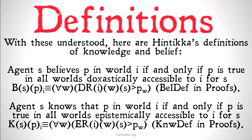With these understood, here are Hintikka's definitions of knowledge and belief. Agent S believes P in world I, if and only if, P is true in all worlds doxastically accessible to I for S. Logically, that can be put as: S believes that P in world I if and only if, for all worlds W, the doxastic accessibility relation holds between I and W for P, implies that P is the case in W.